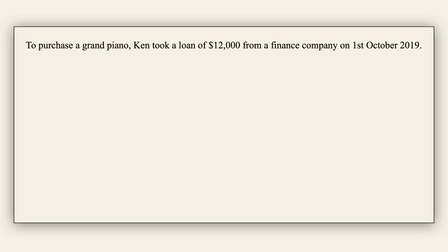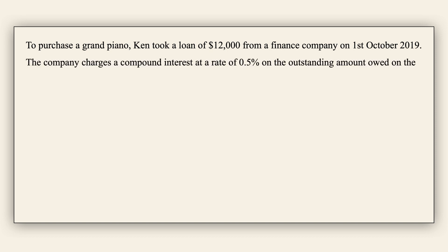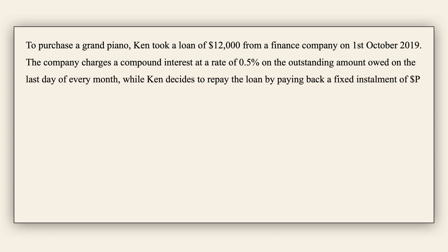Here's an example. To purchase a grand piano, Ken took a loan of $12,000 from a finance company on 1st October 2019. The company charges compound interest at a rate of 0.5% on the outstanding amount owed on the last day of every month, while Ken decides to repay the loan by paying back a fixed installment of P dollars on the first day of each month starting from 1st November 2019.